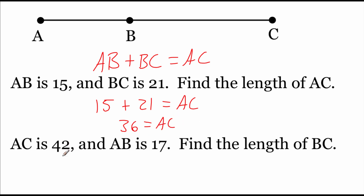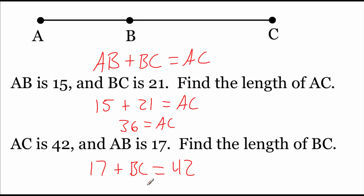Now if we look at our next example, this time we're told that the length of AC is 42, the length of AB is 17, and we're going to figure out how long it is from B to C. Filling in the information: 17 plus BC equals 42. If we subtract 17 from both sides, the 17s on the left hand side cancel out and all we'll have left is BC, and on the right hand side 42 minus 17 gives us 25.